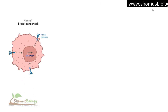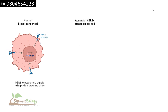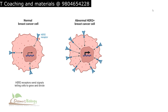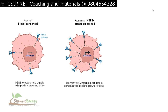In a normal breast cell, we have limited HER2 receptors on the surface and normal signaling processes utilizing the HER2 growth receptor. In an abnormal HER2-positive breast cancer cell, there are far more HER2 receptors than a normal cell can handle. Due to the increased number of HER2 receptors, cell signaling for growth and proliferation increases significantly, causing cells to grow too quickly.